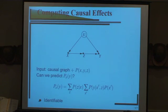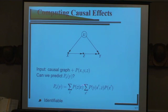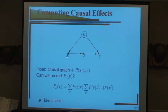In some other models, the effect might be identifiable. For example, even if U is unobserved, we can show that the causal effect of X on Y can be expressed in terms of the joint distribution over X and Y, and so the causal effect is identifiable.